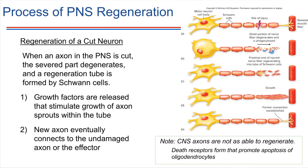Neurons are not generally capable of dividing — pretty much once they are formed, that's it; they do not undergo cell division. However, they are capable of being repaired. If they experience damage, it's possible for them to undergo regeneration to some extent. This is particularly true in the peripheral nervous system, not so much in the central nervous system.